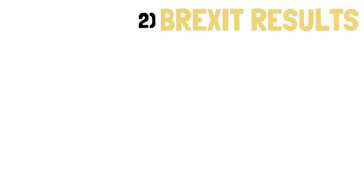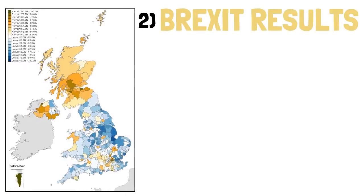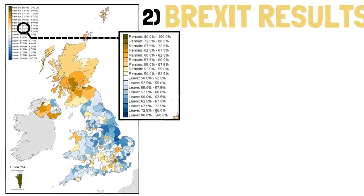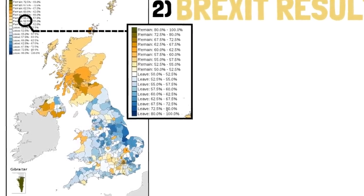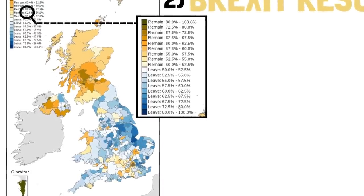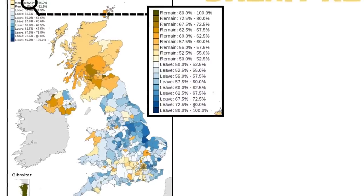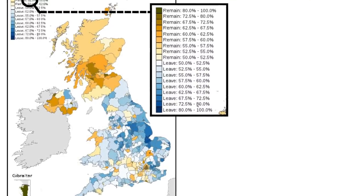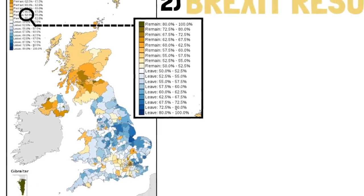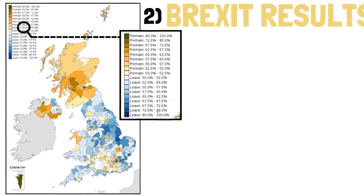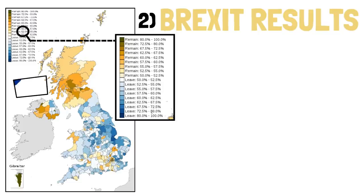The Brexit referendum took place a few years ago, but it's still interesting to revisit the results. On this detailed map, the darker the orange, the more an area voted to remain; the darker the blue, the more it voted to leave the EU. It was clearly a very close vote — most tones are light — but two clear things stand out: Northern Ireland and Scotland mostly wanted to stay, while Wales and England mostly wanted to leave.